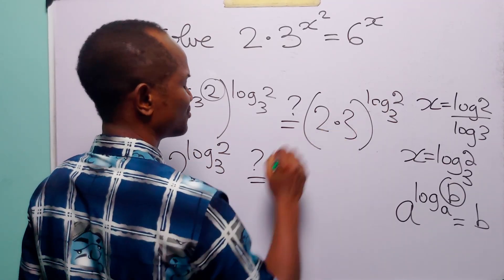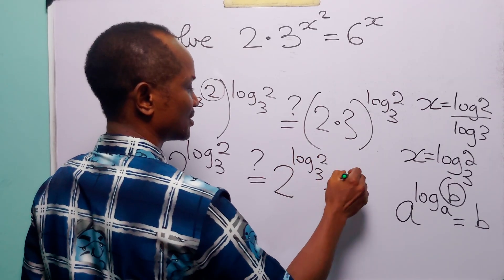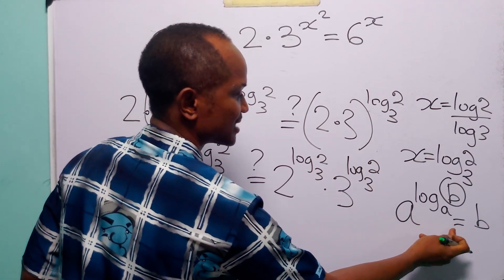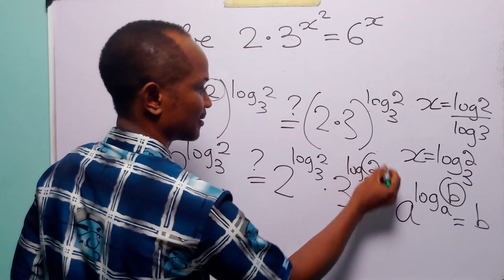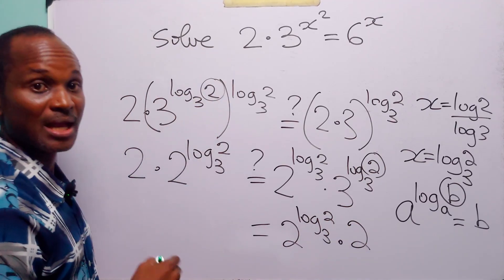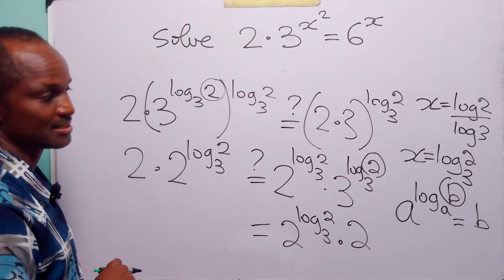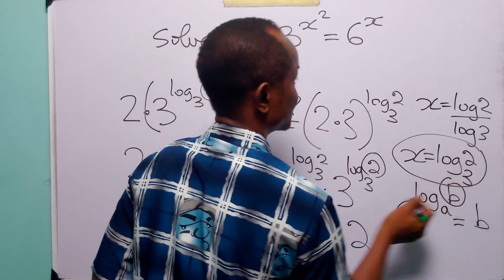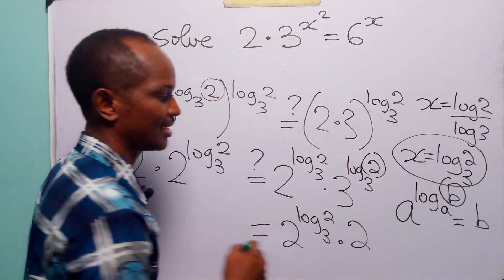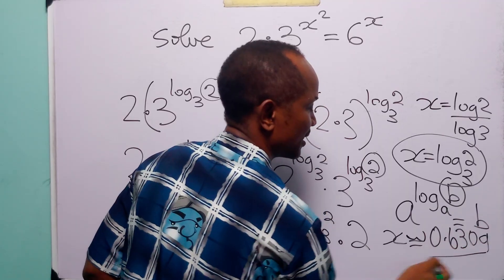On the right-hand side, opening the bracket, we have 2 to the power log base 3 of 2 multiplied by 3 to the power log base 3 of 2. Going back to the identity, this becomes 2 to the power log base 3 of 2 multiplied by 2. The left-hand side is exactly equal to the right-hand side, so this value of x satisfies the original equation. If you want this in decimal, x is approximately equal to 0.6309.